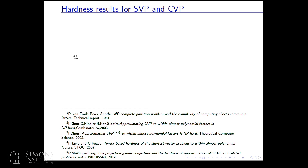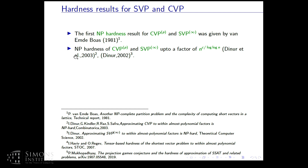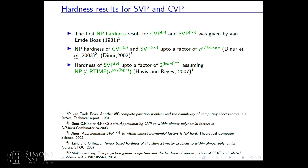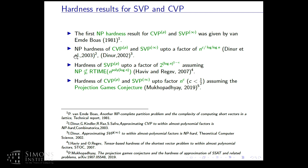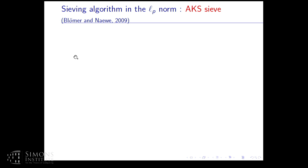A quick recap of hardness results for SVP and CVP. The first NP-hardness result for CVP in the LP norm and SVP in the L-infinity norm was given by Van Emde Boas in 1981. NP-hardness of CVP in LP and SVP in L-infinity up to a factor n^(c / log log n) was given by Dinur, Kindler, and Safra. Haviv and Regev, building on work by Khot, gave hardness of SVP in the LP norm for a hardness factor of 2^(log^(1-ε) n), assuming NP is not a subset of RTIME(n^(poly log n)). Recently, I have shown hardness of CVP in LP and SVP in L-infinity up to polynomial factor n^c where c < 1/2, assuming the projection games conjecture.